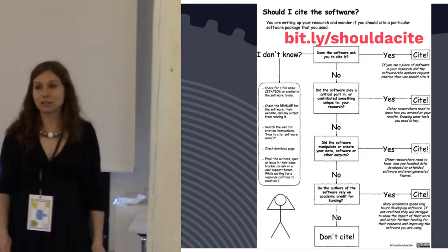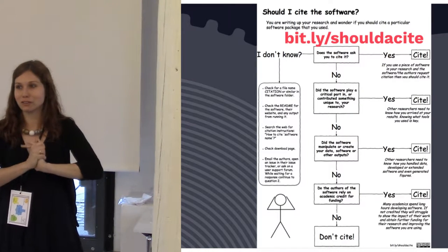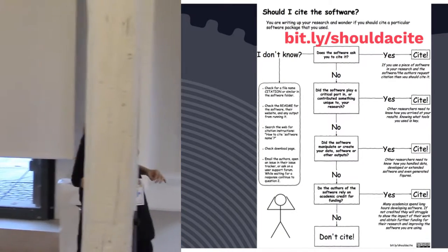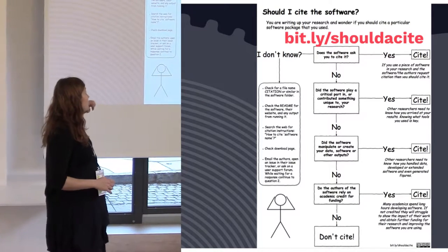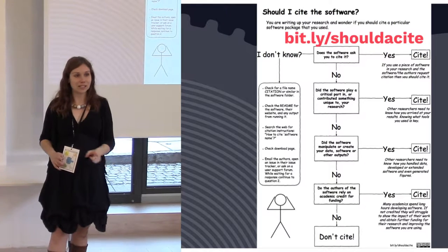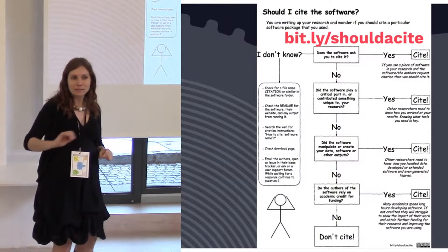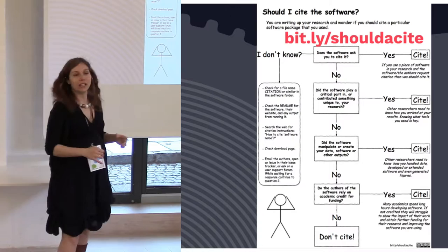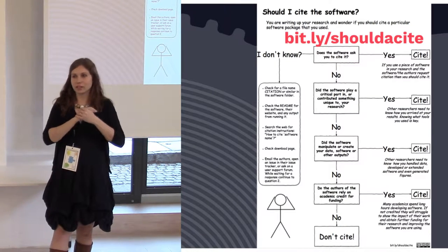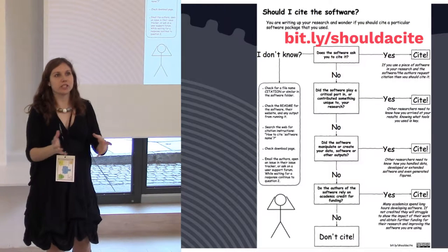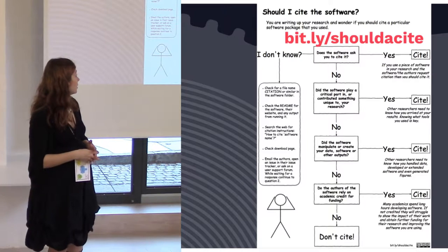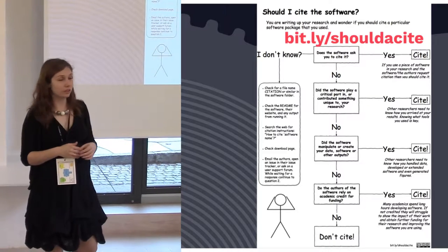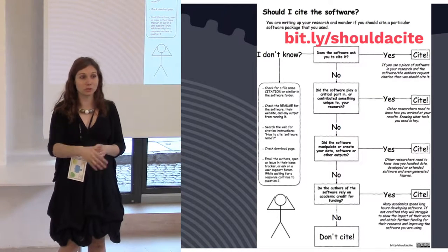Very recently I went to a hack day and created a tool that allows you to figure out if you should cite software. That actually applies to any research software — GIS, statistics, anything. If the software asks you to cite it, you have to cite it. If it plays any critical role in your results, you have to cite it so that people can reproduce your work. And if those aren't the case, you should still cite it if the people behind it depend on academic funding, because they need to show impact.